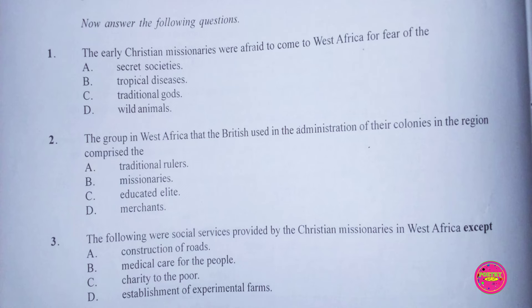Question 2. The group in West Africa that the British used in the administration of their colonies in the region comprised: A. Traditional Rulers, B. Missionaries, C. Educated Elites, D. Merchants. The correct answer to this question is A. Traditional Rulers.